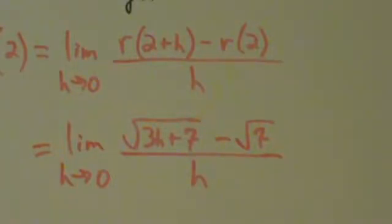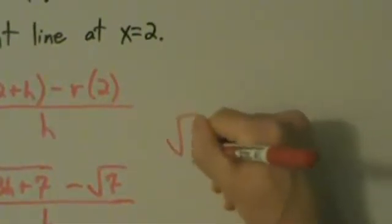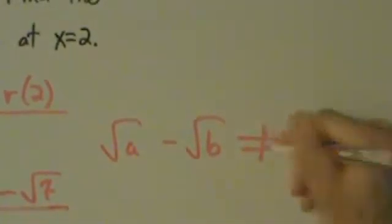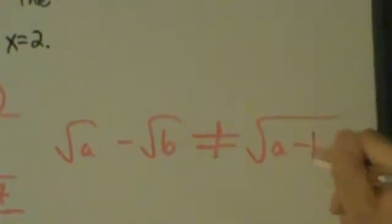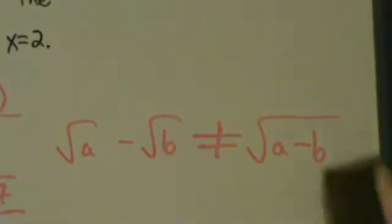Well, from here, you might be kind of tempted to combine these into one square root, but you can't do that. It doesn't work like that. It would be nice because then we can get rid of the 7s, but we can't do it like that because, in general, square root of a minus square root of b is not the same thing as the square root of a minus b. If that ever happens, it's just a coincidence, but in general, this is not true. So we can't use this.